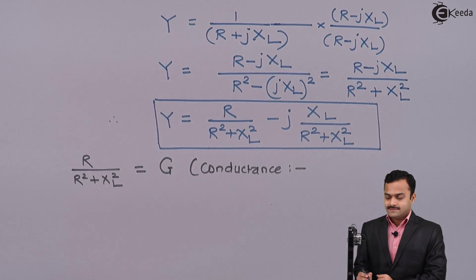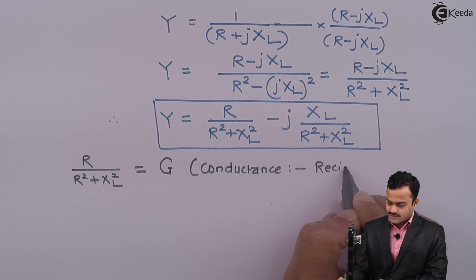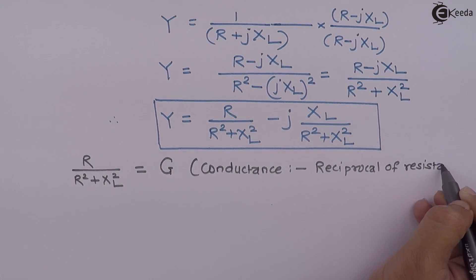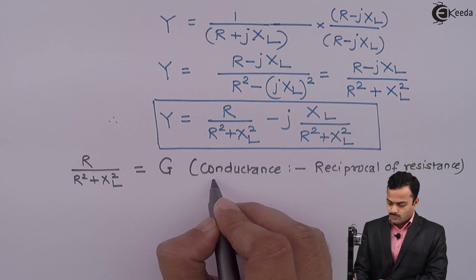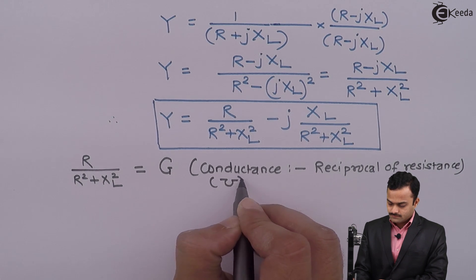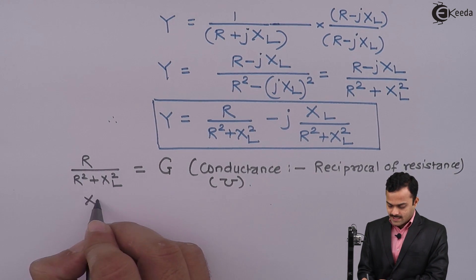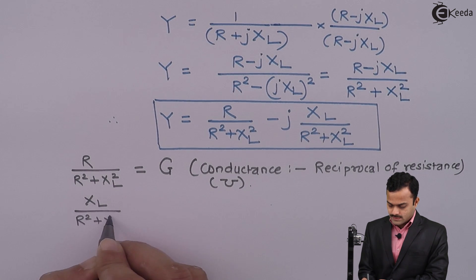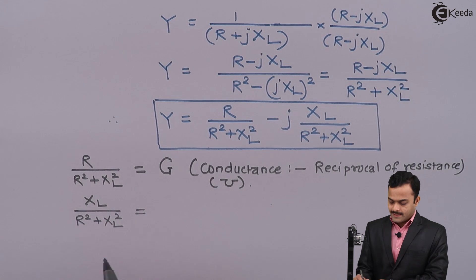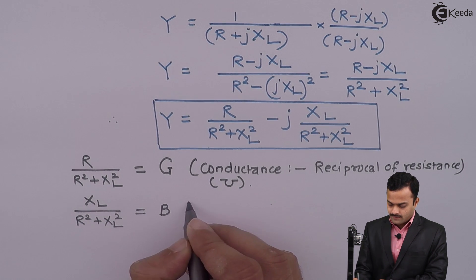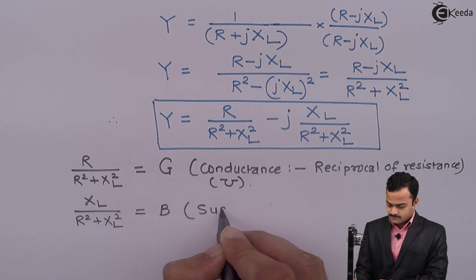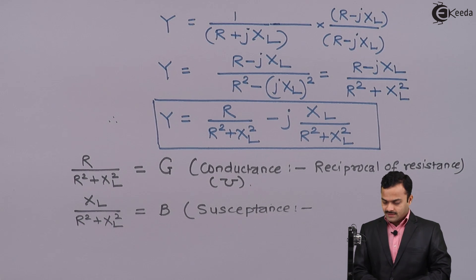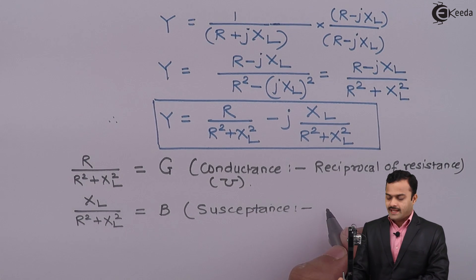This real term R/(R² + XL²) is nothing but G, and G is conductance. Conductance is the reciprocal of resistance, and the unit of conductance is mho. The second term is XL/(R² + XL²), and that is B. B is susceptance, and susceptance is the reciprocal of reactance.